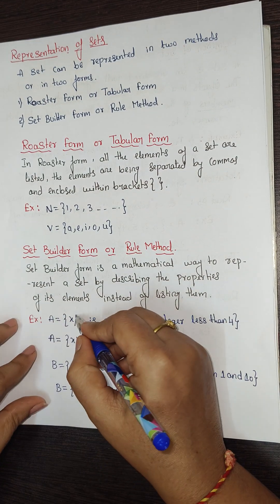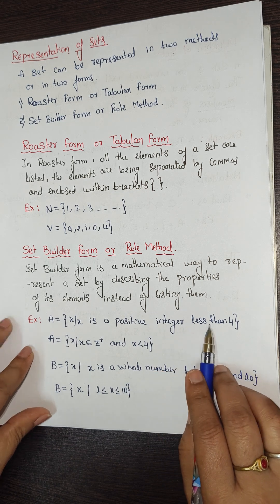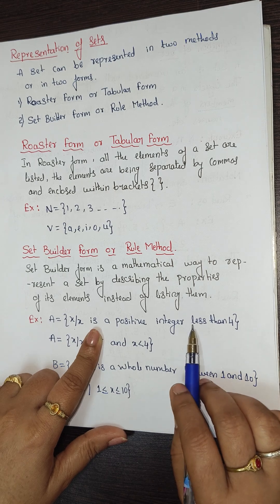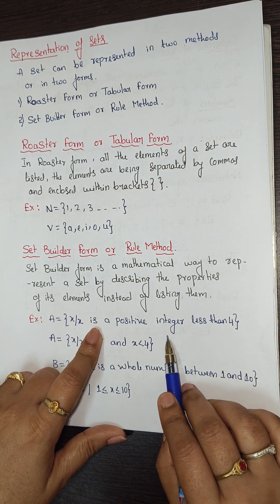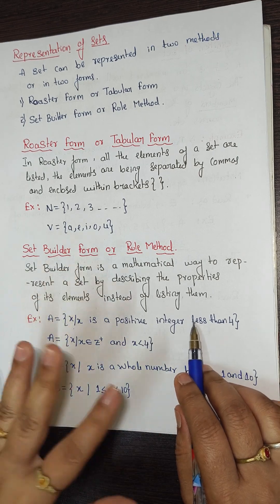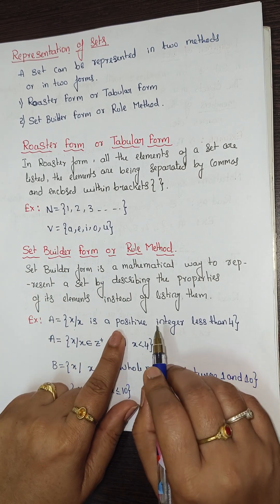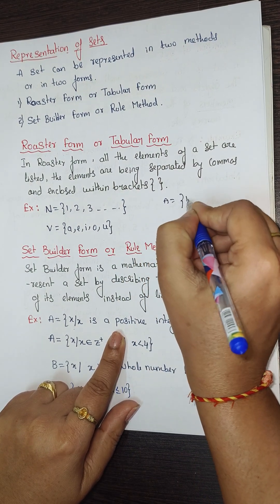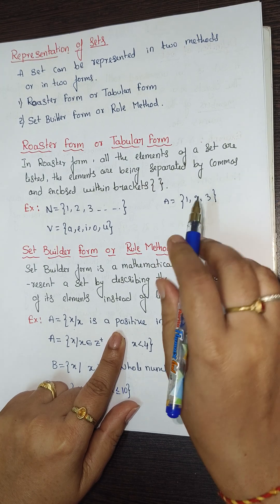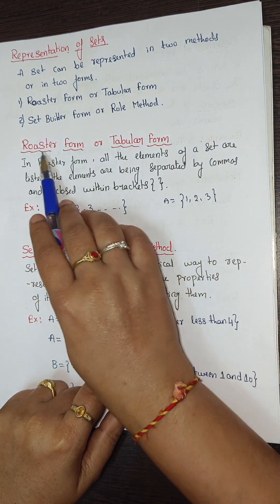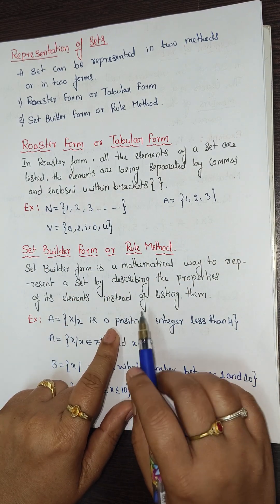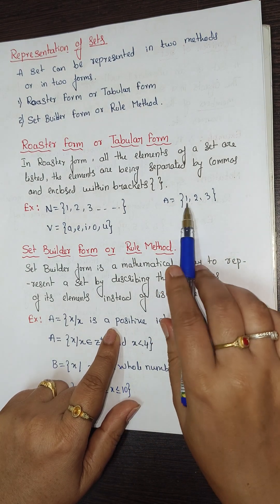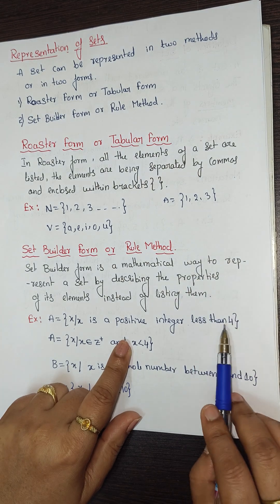Example: {x | x is a positive integer less than 4} — the vertical bar means 'such that'. Positive integers less than 4 are 1, 2, 3 (since 0 has no sign and negatives are excluded). In roster form, the same set is written as A = {1, 2, 3}. Writing it as 'positive integer less than 4' is the set builder form.